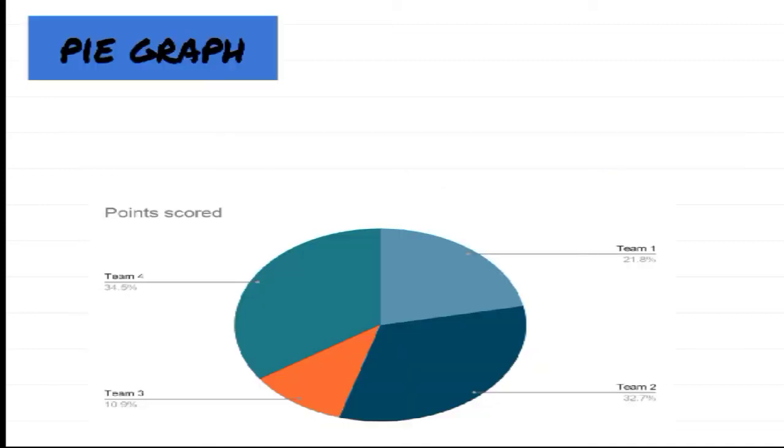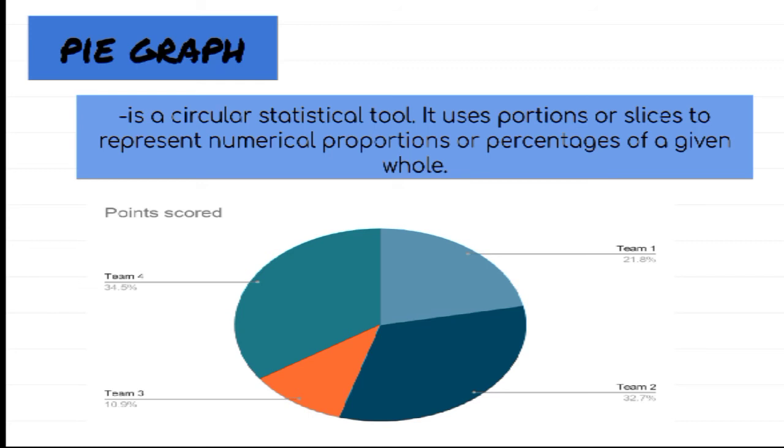Next is a pie chart or pie graph. It is a circular statistical tool. It uses portions or slices to represent numerical proportion or percentages of a given pool.